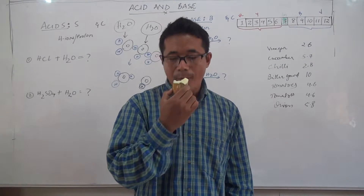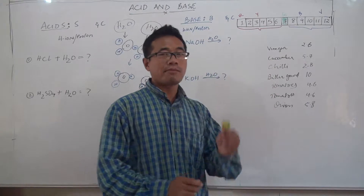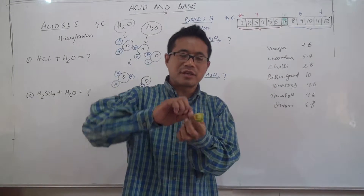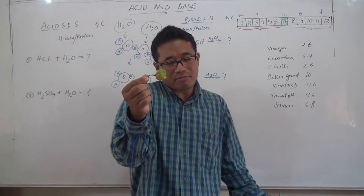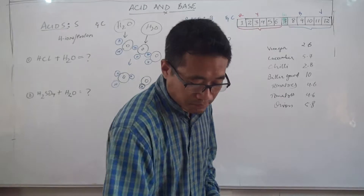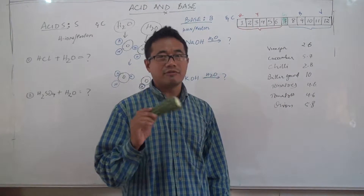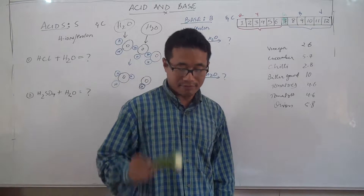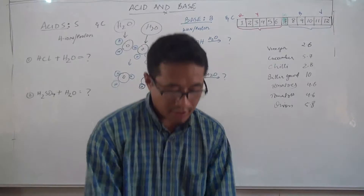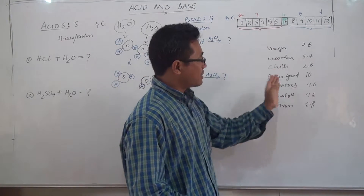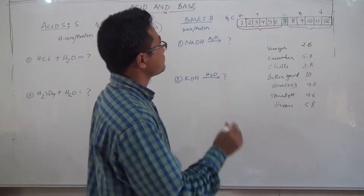Next we have chili — very acidic. This king chili is very bad for our health sometimes. Bitter gourd is very bitter and you don't feel like eating it, but it is good for health because it is very basic. Tomatoes and onions are towards the acidic side but are good for our health.